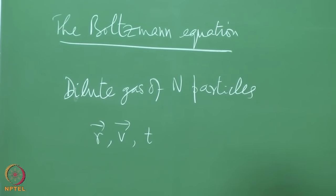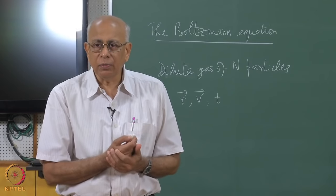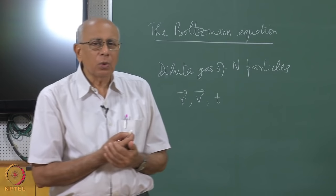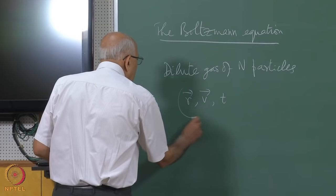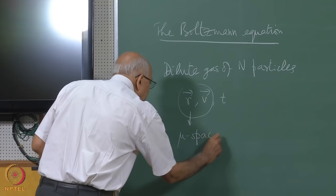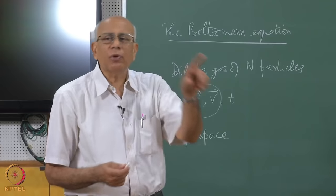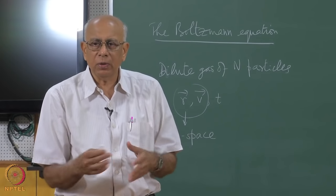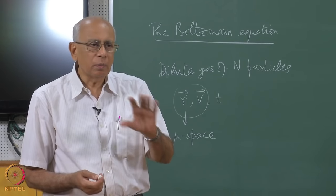A particle is described by specifying its position r and velocity v at any given time t. The space of all possible r's and v's—where r is inside the volume of the container—is the phase space of a single particle, known as mu space. The idea is that this mu space is the same for all the particles; any one particle will have the same set of possible values of r and v.